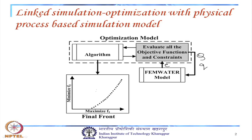This is a multi-objective optimization problem. We have one optimization model that during evaluation of objectives and constraints calls the FEFLOW density-dependent flow and transport simulation model. We pass pumping values Q (production wells) and q (barrier wells) to FEFLOW, and receive concentration values C in return. The two objectives — maximize production F_1 and minimize barrier well pumping F_2 — conflict with each other, creating a trade-off.